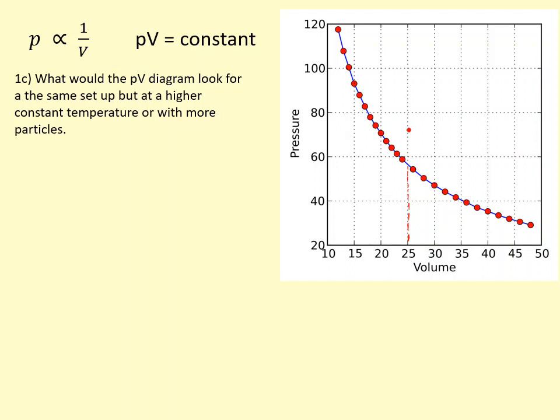Not only that, they'll be moving faster, so they'll collide with a higher velocity as well. A graph would look like this if it's higher temperature or higher number of particles, and the higher the temperature, the higher up the graph would look like, and they will never touch the X or Y-axis.